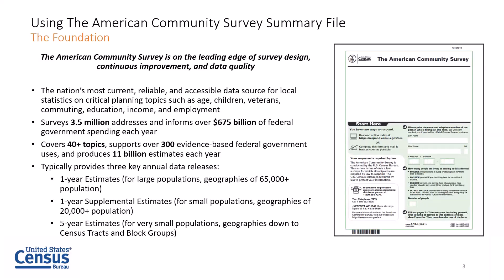These data are collected continuously throughout the year to produce annual social, economic, housing, and demographic estimates. The data collected through ACS are used to inform the distribution of more than $675 billion of federal government spending each year. The ACS is designed to produce critical information on small areas and small population groups previously collected every 10 years as part of the decennial census long form. With the introduction of the ACS, communities and businesses receive more current data, and the census questionnaire sent to all residents every 10 years has been significantly shortened.